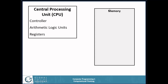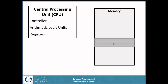Memory is a place that the central processing unit can access where you store a bunch of zeros and ones. Part of that memory is where the programs are stored that the central processing unit is going to be executing. There is a very important concept called a program counter that points to the next instruction that needs to be executed.